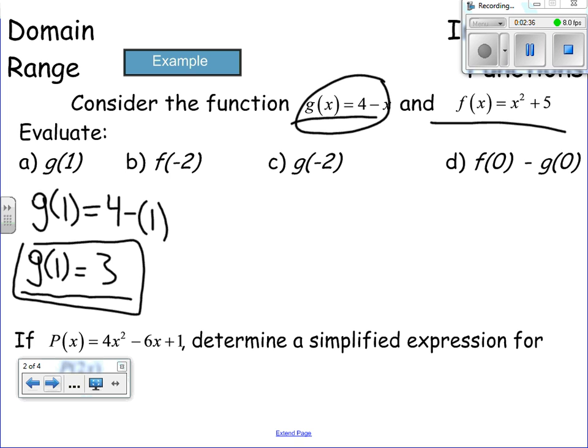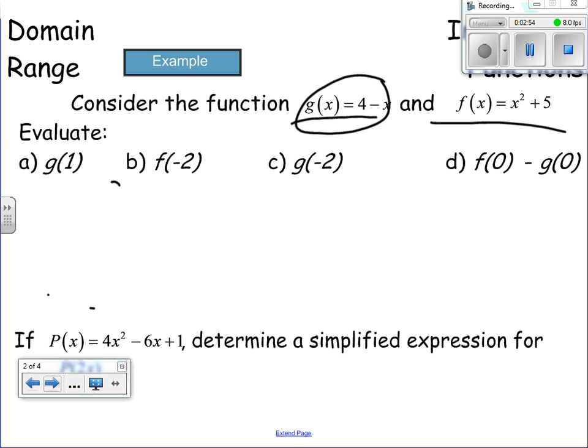Okay, b. Doing the same thing, right? But now you're doing it with f of x, and we're doing negative 2. That's when those brackets are going to come in forward. f at negative 2 is equal to negative 2 squared plus 5. Did everybody get where that came from? Yeah. Perfect. Now just do the math. What's negative 2 squared? Is it negative 4 or 4? It's 4. That's why those brackets matter. f of negative 2 is equal to 4 plus 5, you should get 9.